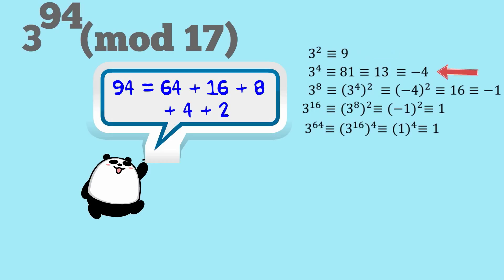Then we go 3 to the fourth is 81. If you divide 81 by 17, you get a remainder of 13. And 13 is equivalent to negative 4. You're generally going to want to use the smallest numbers, whether they're positive or negative in this sort of exercise.